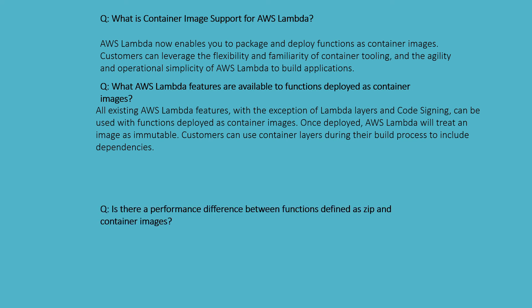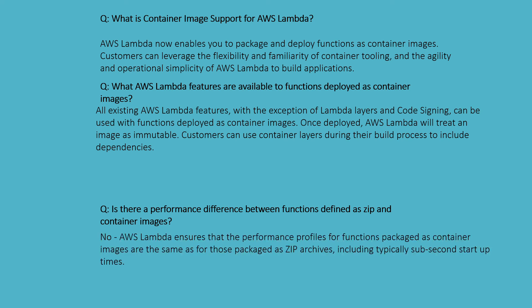Is there a performance difference between a function defined as a zip archive and a container image? AWS Lambda ensures that the performance profile for functions packaged as a container image is the same as for functions packaged as a zip archive, including a typically sub-second startup time.